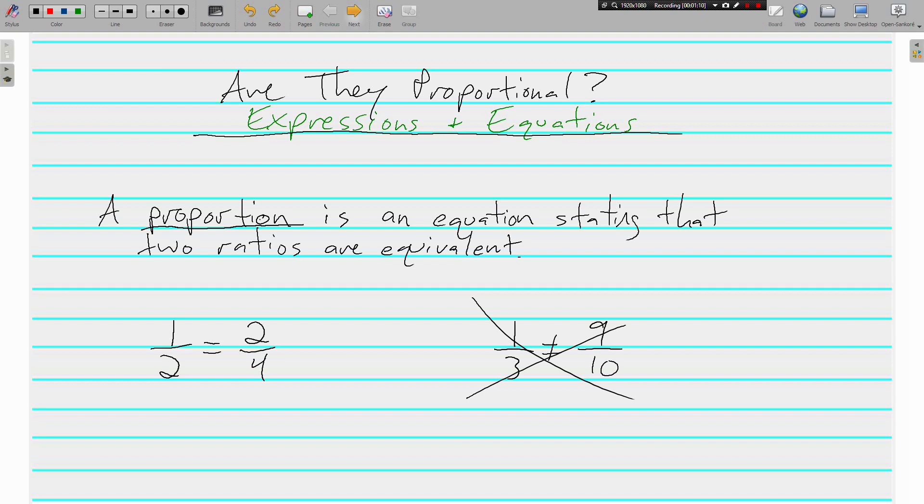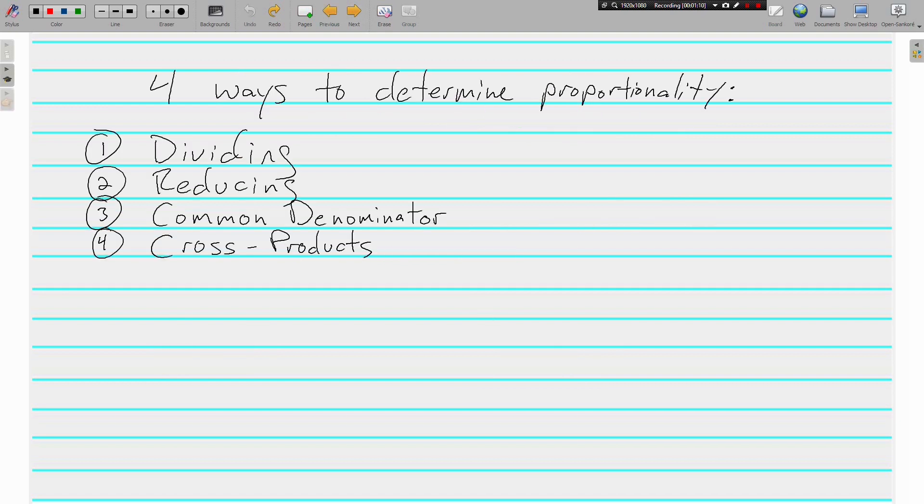Moving on, there are four different ways that we can use to determine proportionality, whether or not two things are proportional. And I'm going to go through each one of them with you. We've got dividing, reducing, finding a common denominator, and using the cross products. Four different ways to determine if two ratios are equivalent.